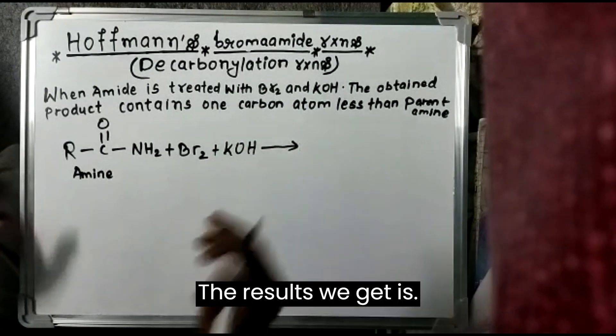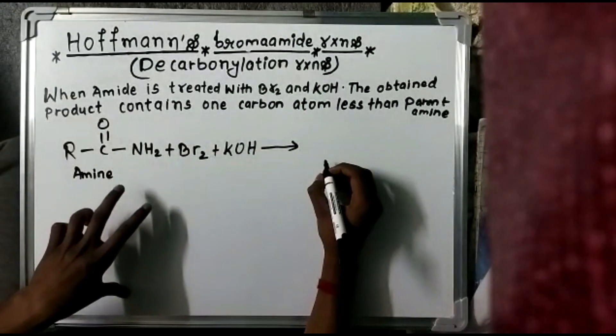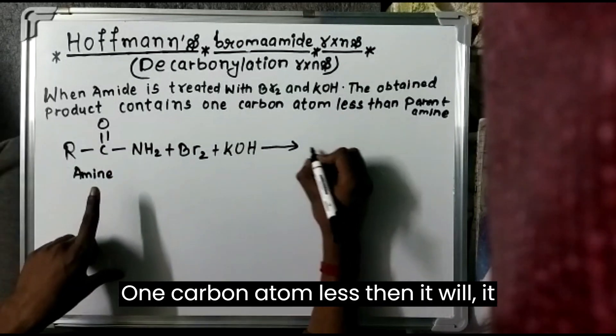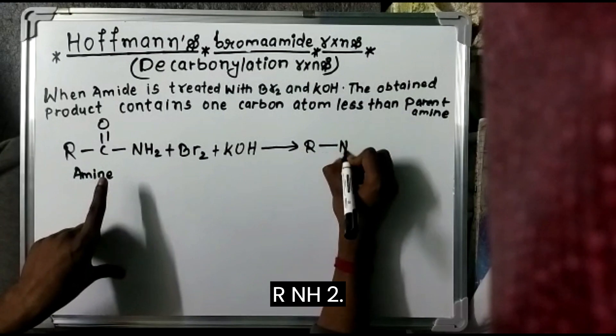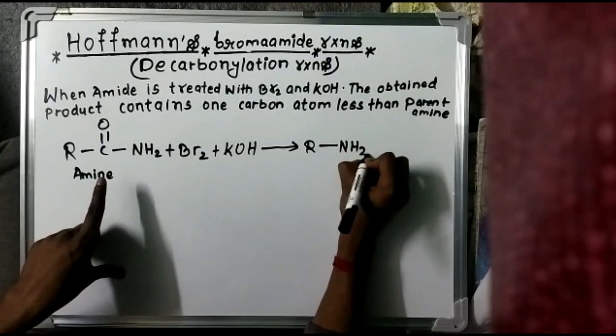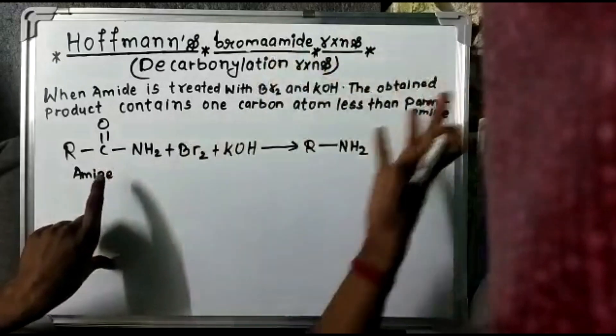As we treat with Br2 plus KOH, the results we get is one carbon atom less than it will become R-NH2 because the whole concept is to decrease one carbon.